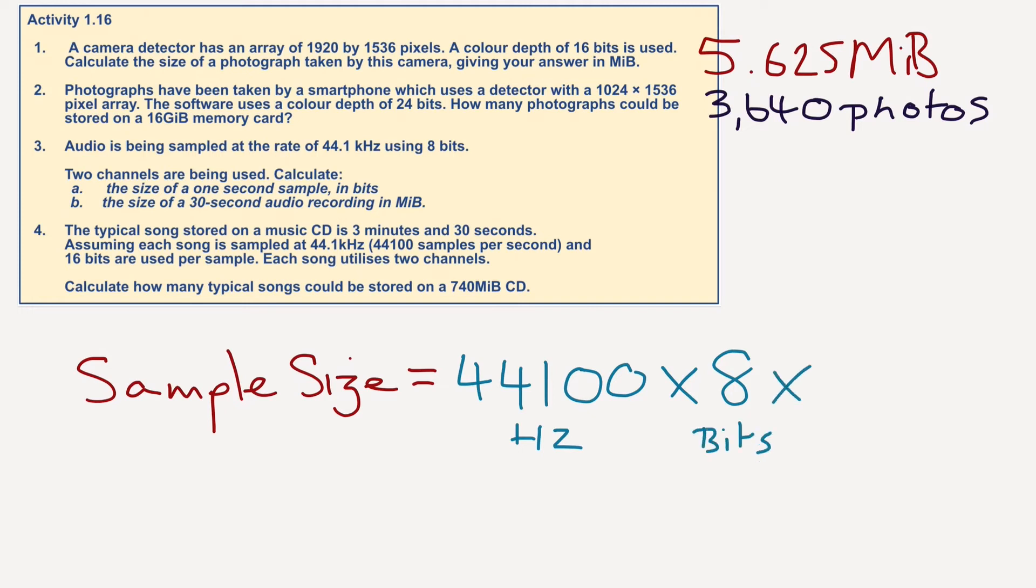And then I'm going to times that by 8. So this is hertz. This is bits. And then we're going to times that by 2, because that's the number of channels. So it's hertz times bits times channels, which equals 705,600. And of course that is bits. That is the answer to A, so let's write that in.